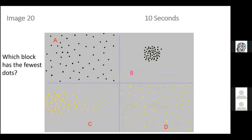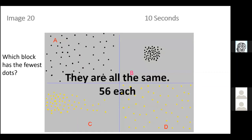For image 20, which block has the fewest dots — A, B, C, or D? Try to estimate how many in just 10 seconds. They're all the same — there are 56 in each. We're showing the difference between what 56 birds looks like when closely packed in block B versus more loosely dispersed in block A, versus different species shown in different colors in the bottom left.